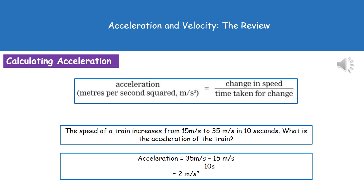To give you an example: the speed of a train increases from 15 meters per second to 35 meters per second in 10 seconds. What is the acceleration of the train? We work out our change in speed. That's 35 minus 15, which gives us 20 meters per second. Then we divide that by our time, which is 10 seconds. So 20 divided by 10 gives us the acceleration of 2 meters per second squared.